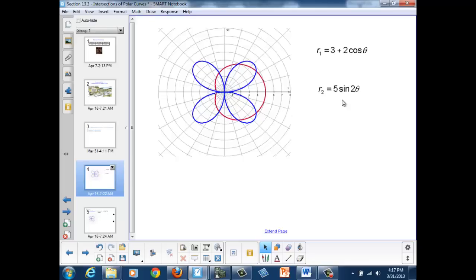And we know it's going to have four leaves because the coefficient on theta is even, and so we double the coefficient to find the number of leaves.